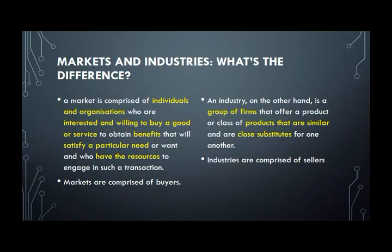An industry, on the other hand, is a group of firms that offer a product or class of products that are similar and are close substitutes for one another. One example is the dairy industry - they do milk, cream, ice cream, frozen yogurt, and these can sometimes be substitutes for each other. So industries are comprised of sellers - these are the people who sell things.